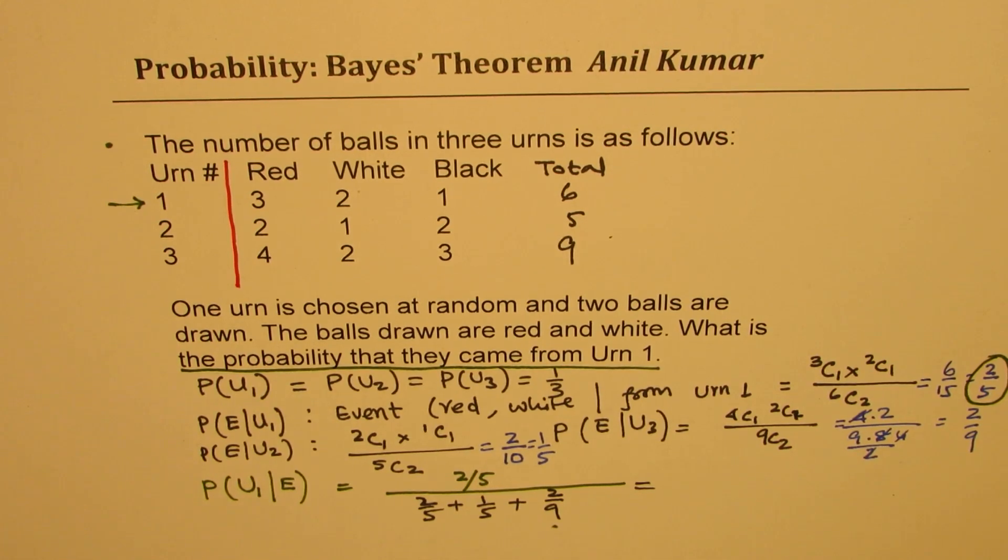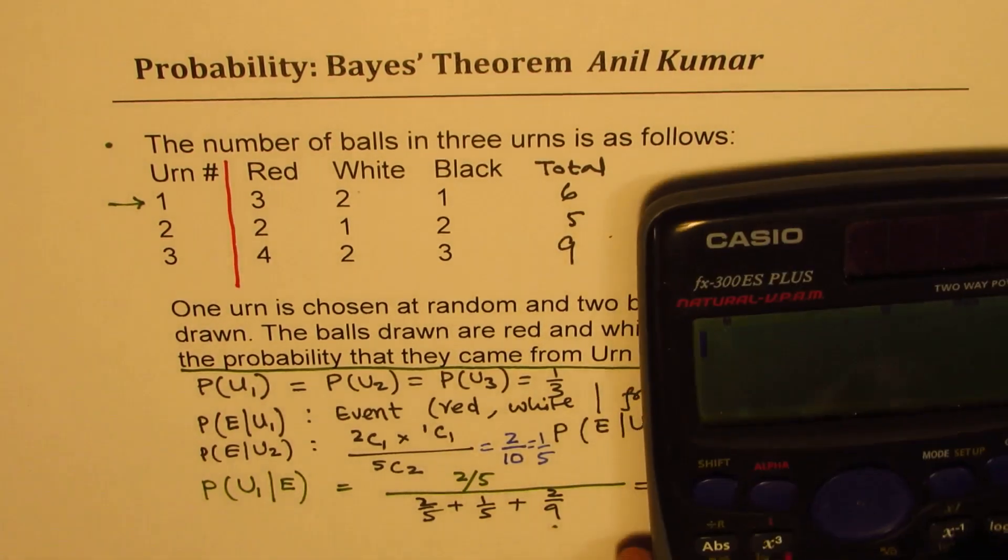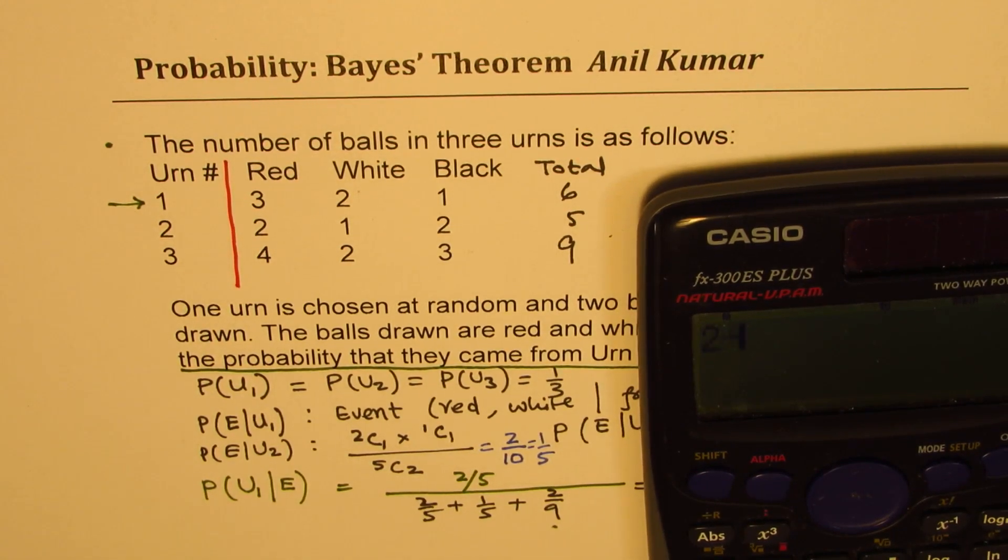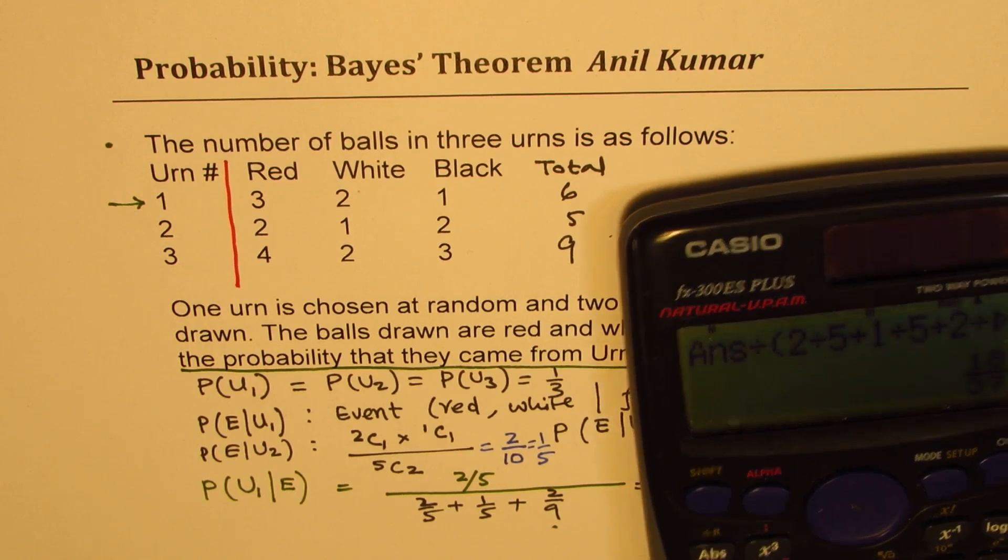So that is how you get the probability that it came from urn 1. So now you can use your calculator to find this out. So, we have 2 divided by 5, and this has to be divided by, within brackets, 2 divided by 5 plus 1 divided by 5 plus 2 divided by 9, bracket close, equals to 18 over 37.